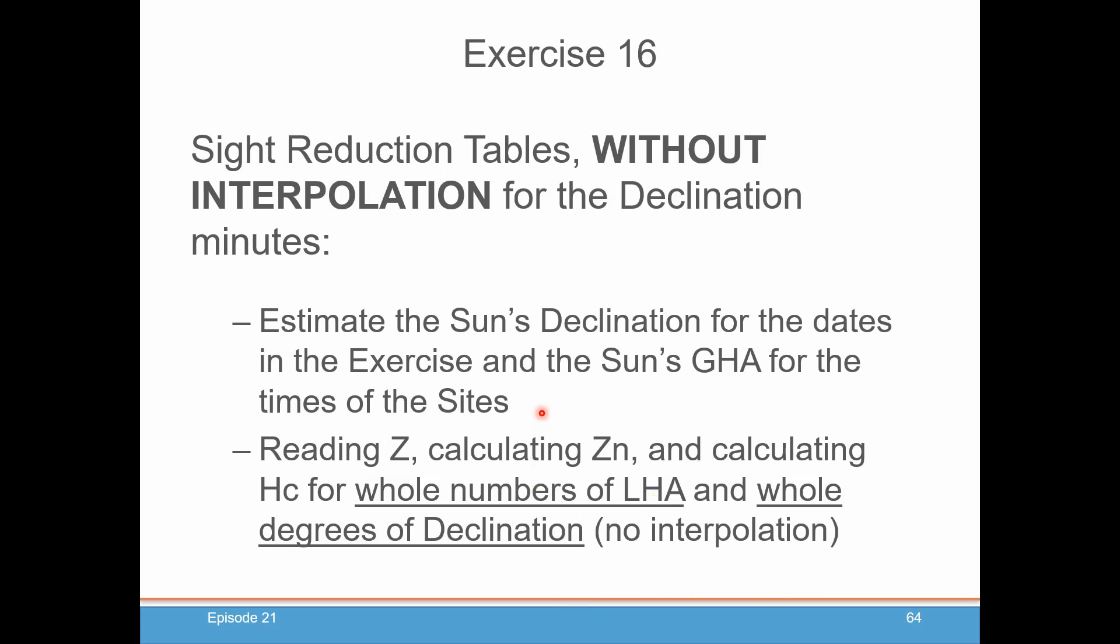Now you have an exercise that you can do in the exercise manual. We're looking at doing this without any interpolation for the declination minutes. We're going to estimate the sun's declination for the dates in the exercise and calculate the sun's estimated GHA for the times of the sites. As you see when we get to the exercise, there's enough information to actually have you do this without even using the nautical almanac.